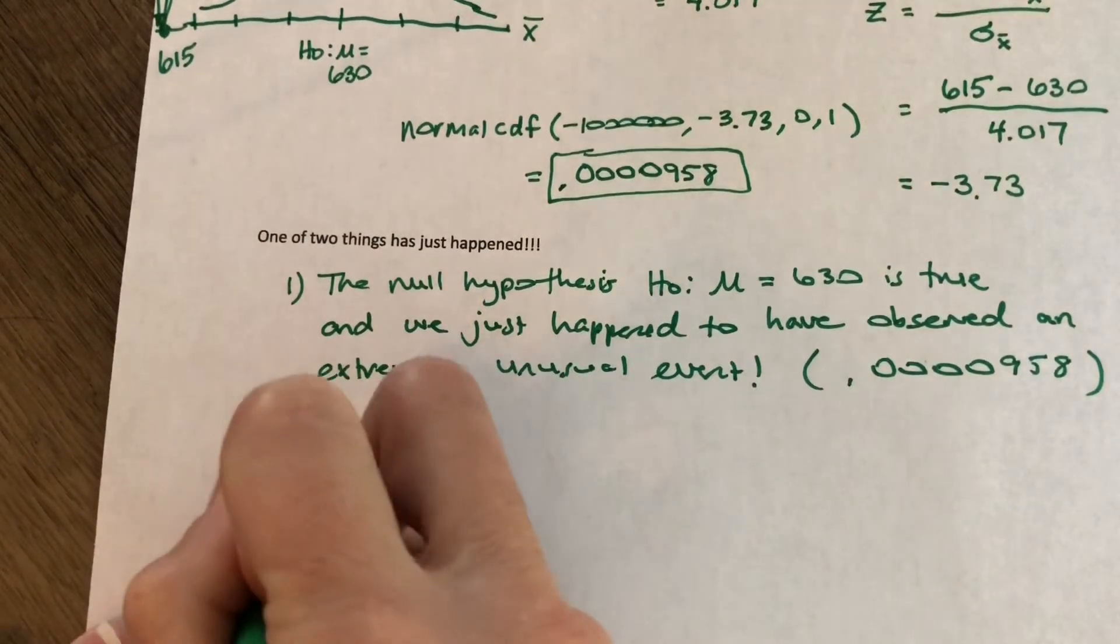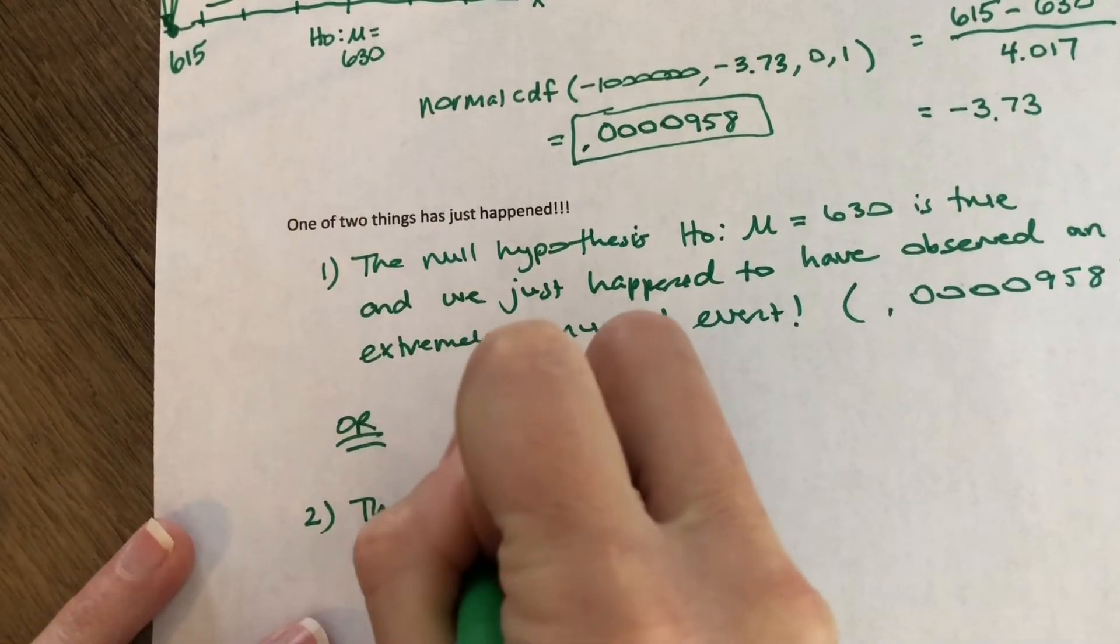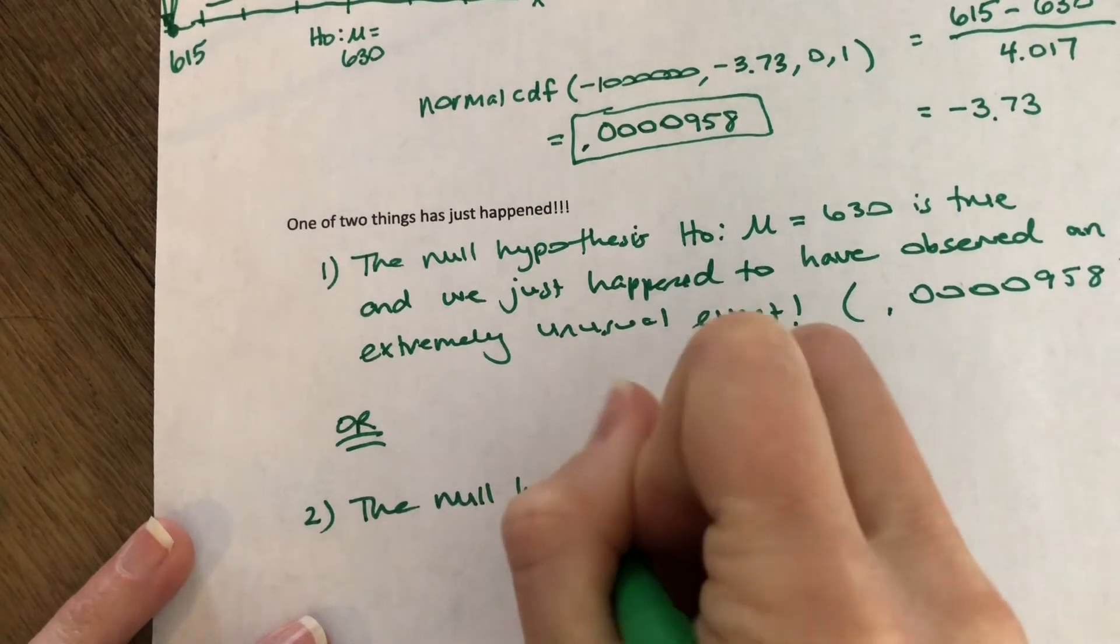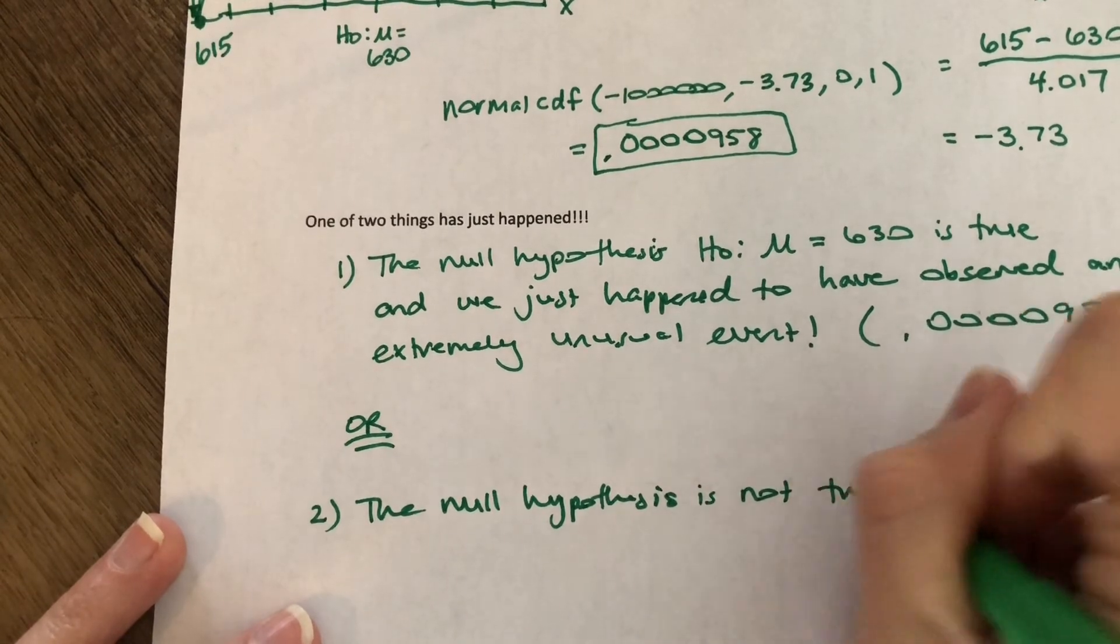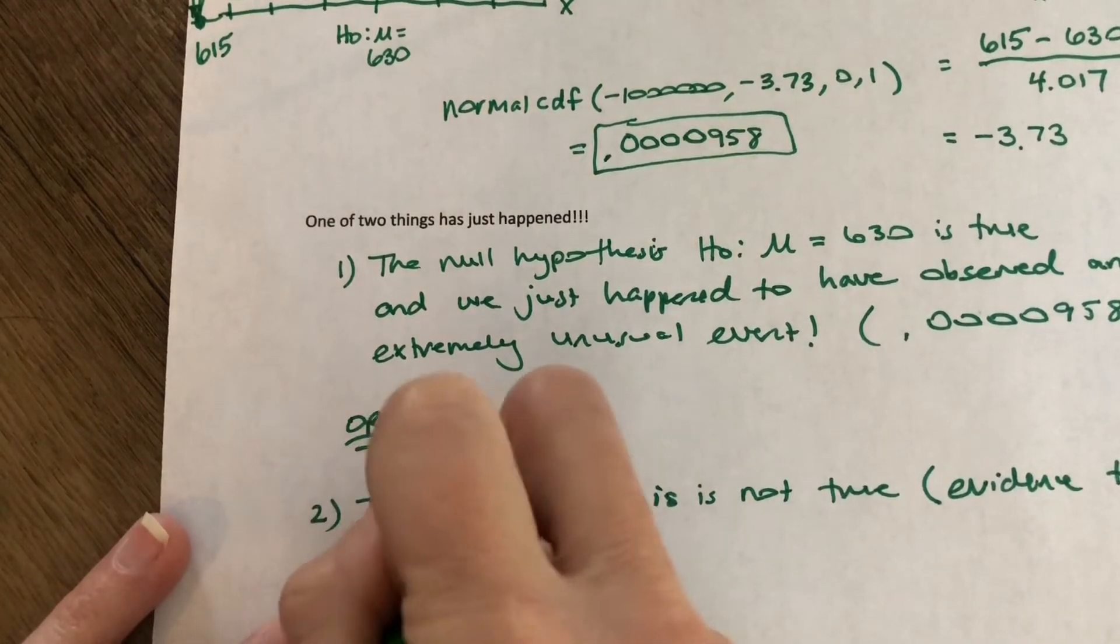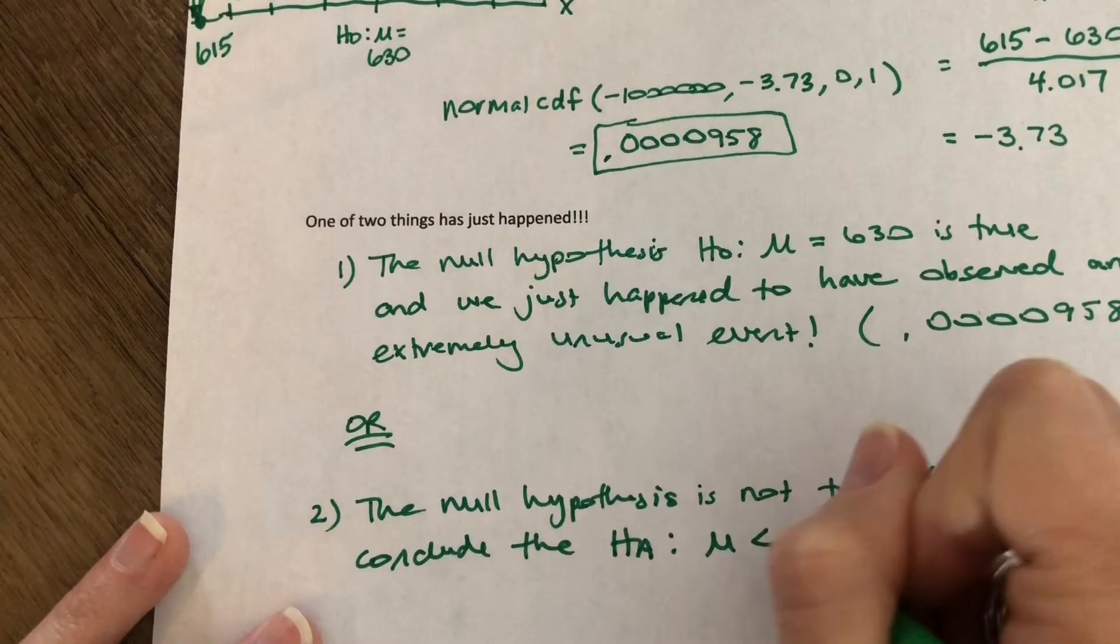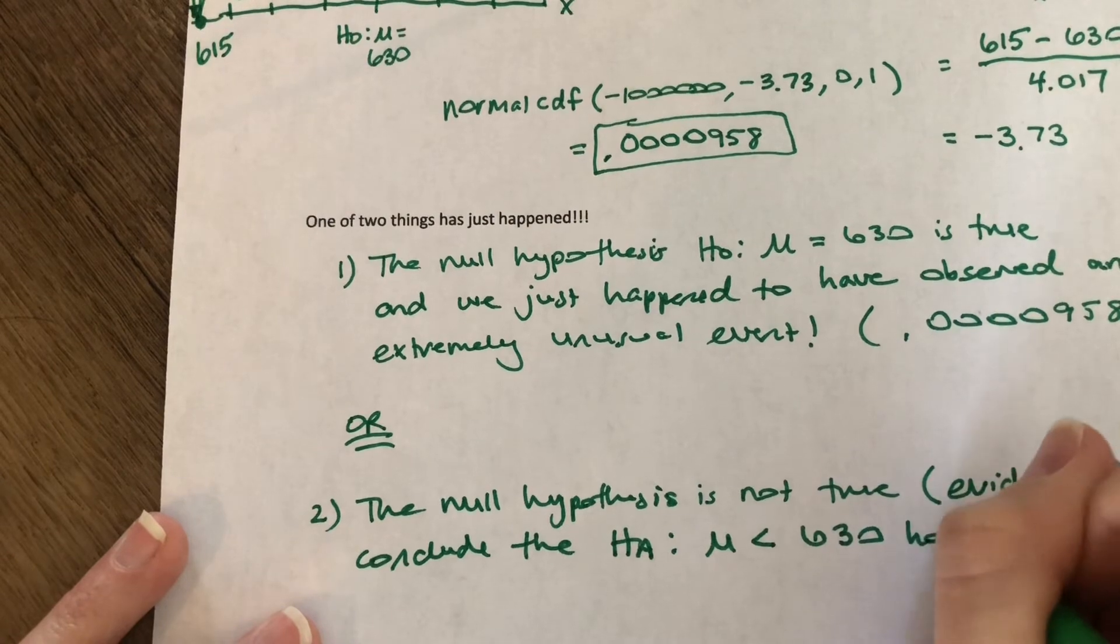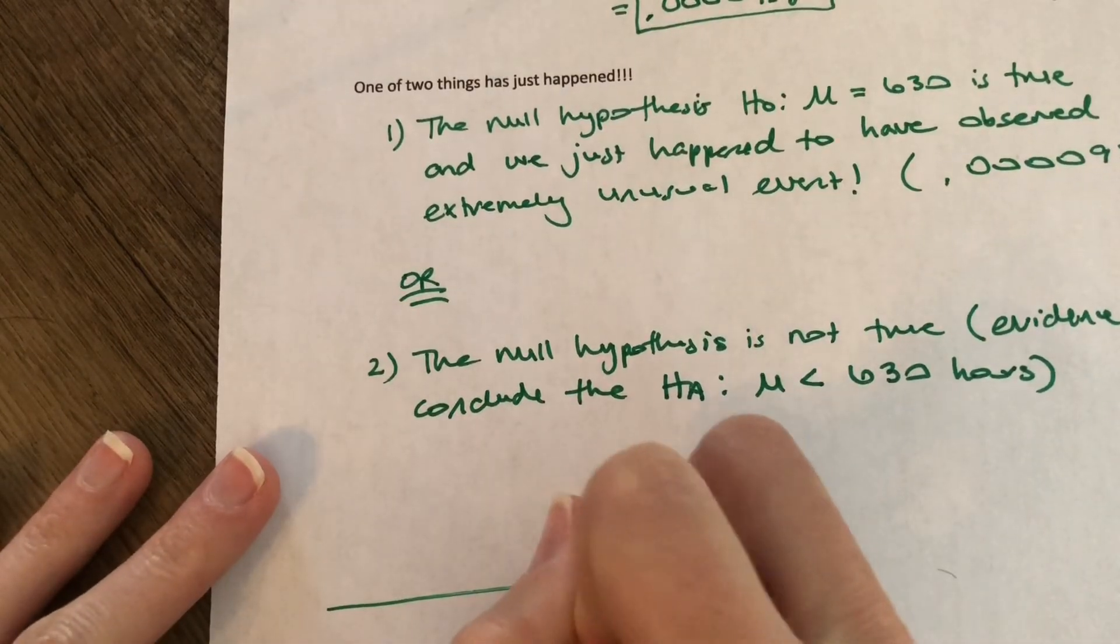So one option is that the null hypothesis is really true. The mean really is 630 hours. And we just happen to have observed something that hardly ever happens. The other option is that the null hypothesis is not really true. So the other option here is that the null hypothesis is not true, which would mean we had evidence to conclude that the alternative hypothesis, which is that the mean is less than 630 hours.